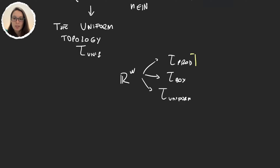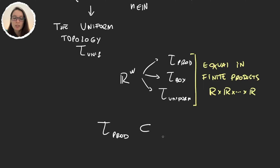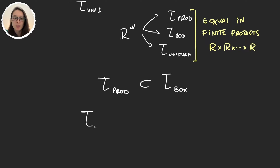These three topologies are all the same if we are talking about a finite product — so basically they are all the same in R^n. But what happens in a countable product? Well, we already knew something about τ_product and τ_box: the product topology is a subset of the box topology. So where does the uniform fit? It's in the middle: the product topology is a subset of the uniform, which is a subset of the box topology.